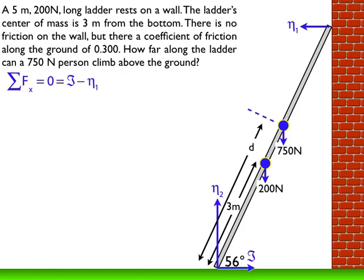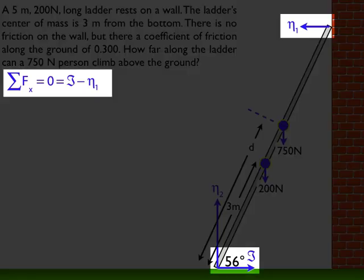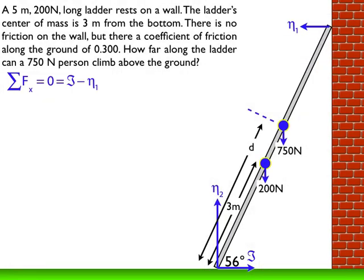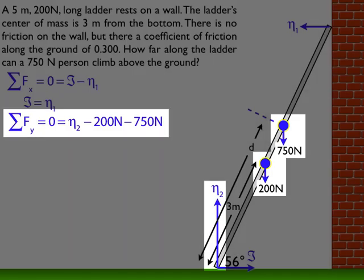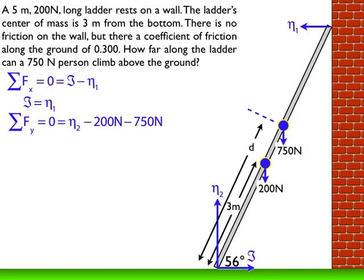I'm going to sum up the forces in the x and y directions. Summing forces in the x direction: 0 equals friction minus eta1, which means friction equals eta1. For the vertical forces: 0 equals eta2 minus 200 Newtons minus 750 Newtons — all forces going up minus all forces going down. Solving that gives eta2 equal to 950 Newtons.